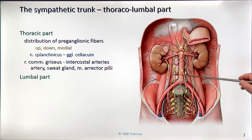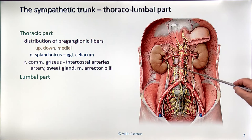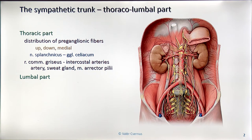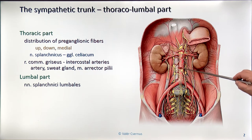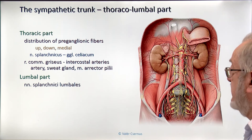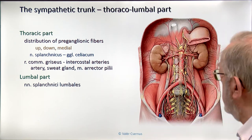In the lumbar region, the structure of the sympathetic trunk is very similar: a ganglion chain interconnected with pre-ganglionic fibers. They also receive white communicating branches — the pre-ganglionic fibers — from the ventral rami of the lumbar spinal nerve, and the post-ganglionic fibers run up and down and partially medially. Those fibers which run medially are named the lumbar splanchnic nerve. Many books don't contain this expression, so try to remember that.